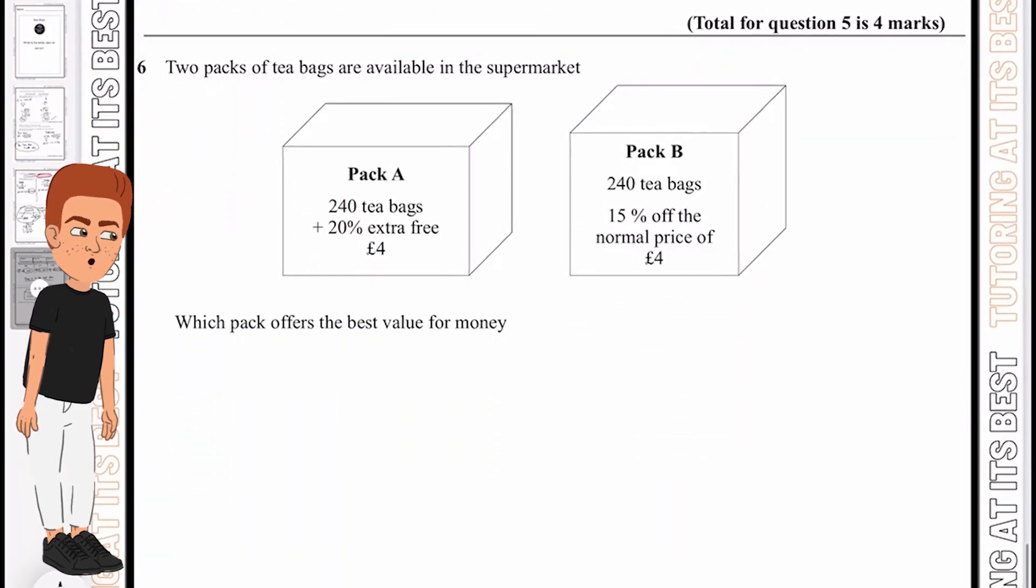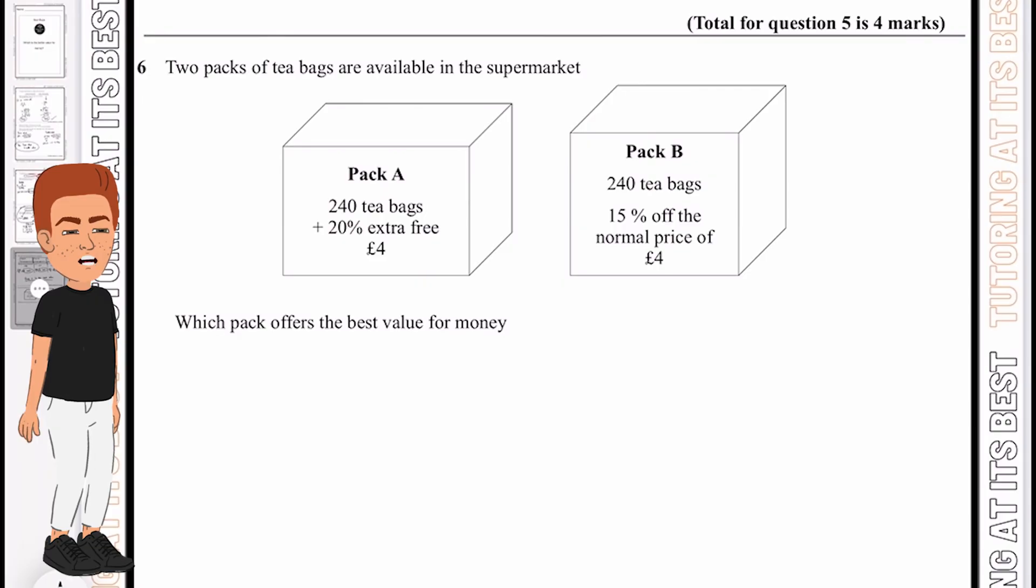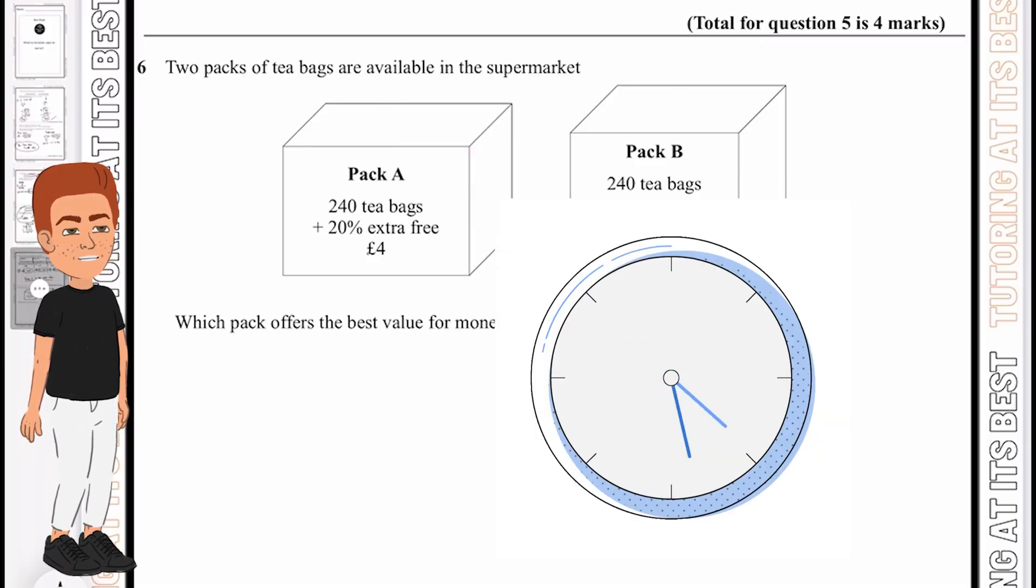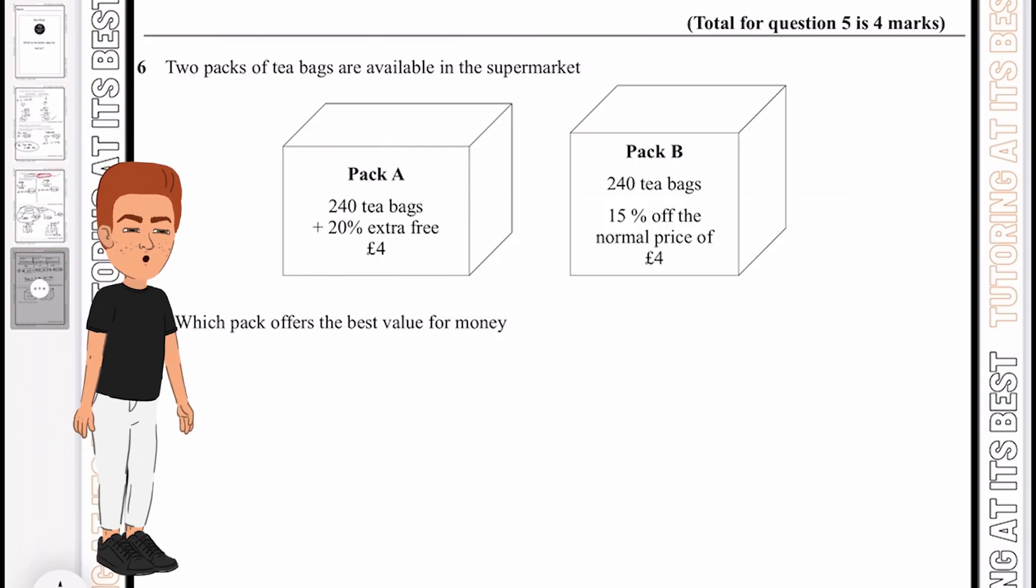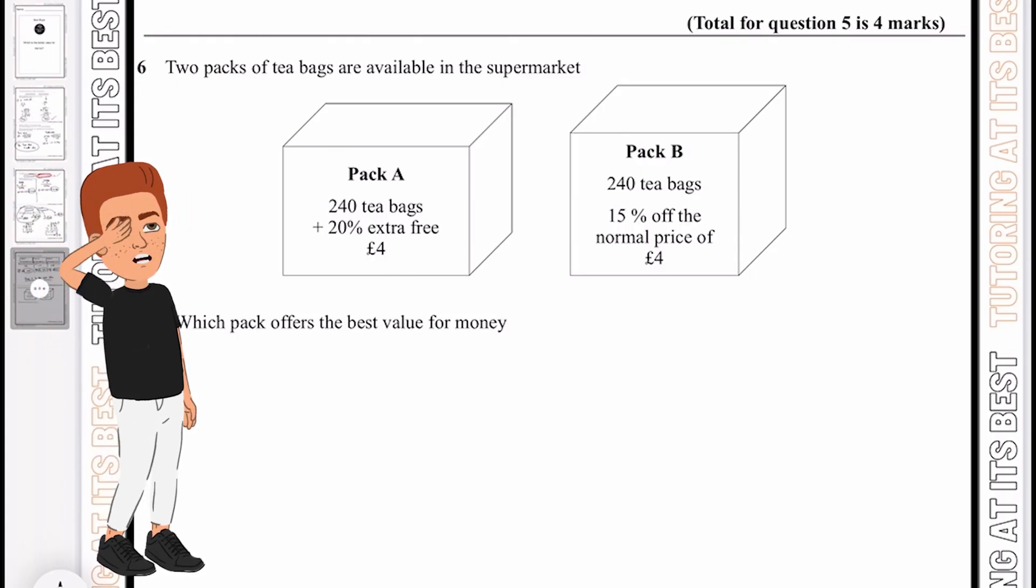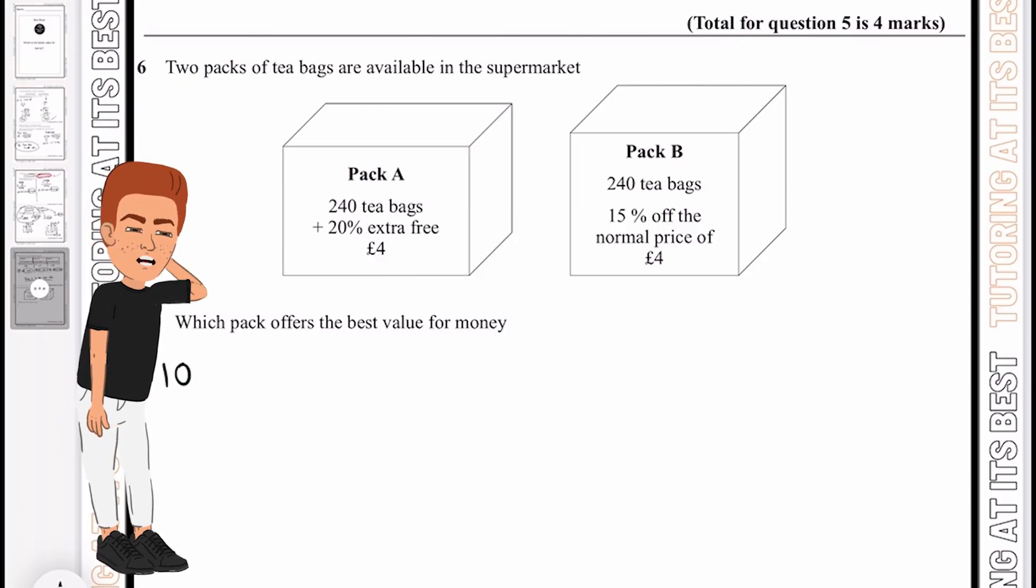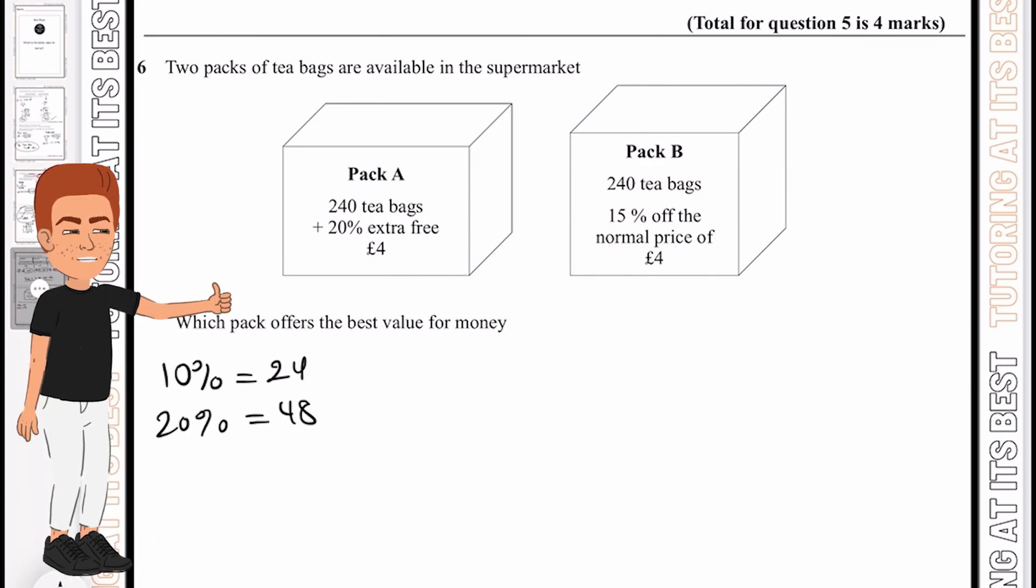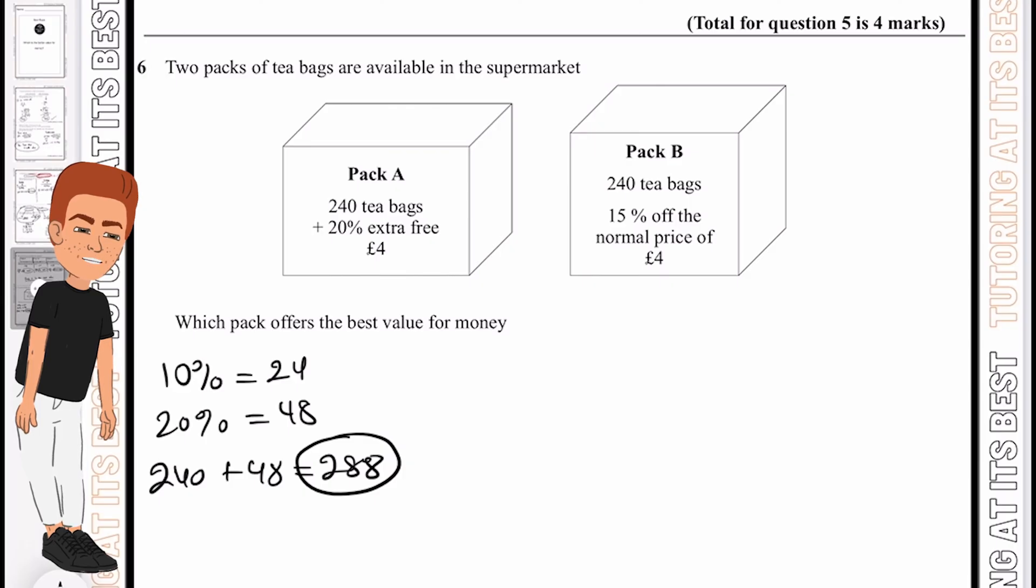Let's move to our final question. Two packs of tea bags are available in the supermarket and now we have a percentage attached. Which pack offers the best value for money? For pack A we get 240 tea bags and 20% extra free, so I need to calculate 20% of 240. We know 10% equals 24, so 20% will be double which is 48. I'll have 240 plus 48 which equals 288, and that costs me four pounds.